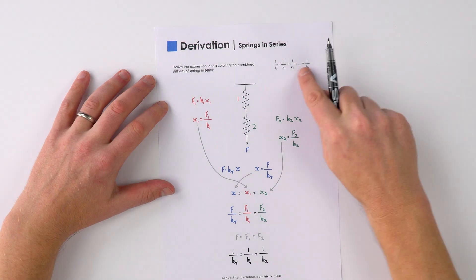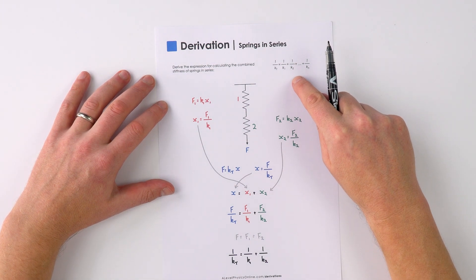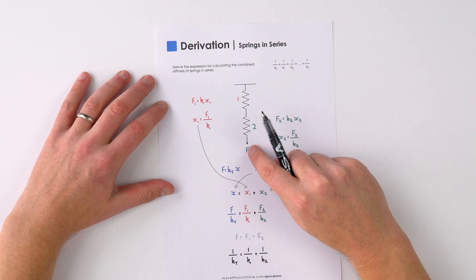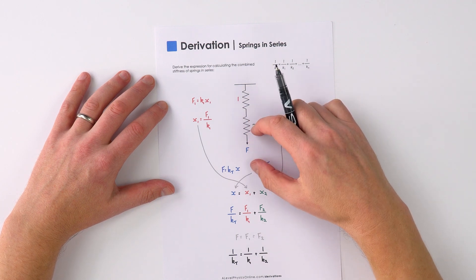This is how to quickly derive this equation for springs in series. We've got spring number one and spring number two, and there's going to be a force applied to them which is going to cause an extension.